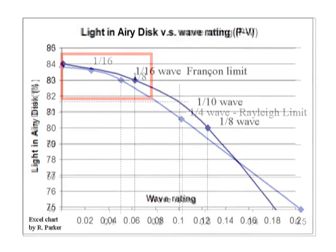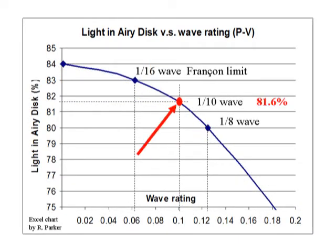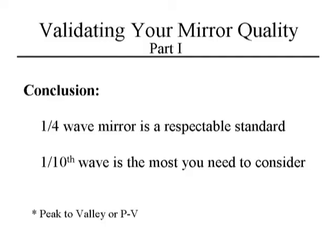A tenth of a wave gives 81.6% of light in the Airy disk versus the Françon limit of 83%. I'd want anyone to stand up and claim they can tell the difference between 81.6% and 83%. When it comes to wave rating — assuming a smooth surface and only primary spherical aberration error — a quarter-wave mirror is a very acceptable standard. A tenth of a wave is the most you ever really need to consider; anyone claiming beyond that, the measurement reliability becomes questionable.